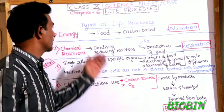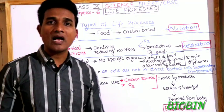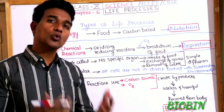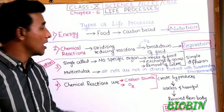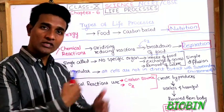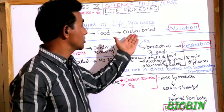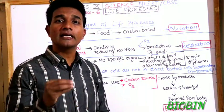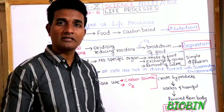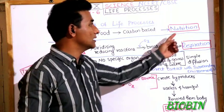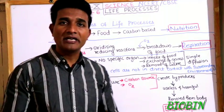Let us study the different types of life processes which help in repairing and maintaining the structures of living organisms. All organisms require energy to do work. This energy requirement is fulfilled by obtaining food from outside the body. This food is mainly carbon-based, so all organisms require food which contains carbon. The different modes of obtaining food are called nutrition.